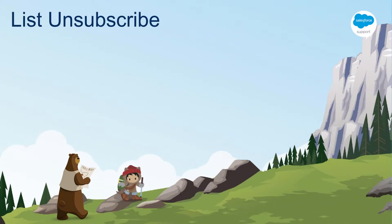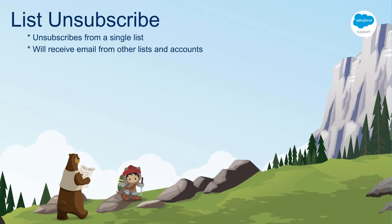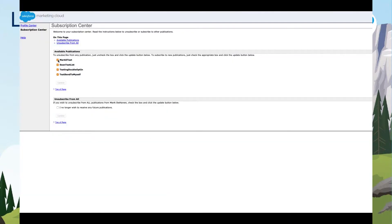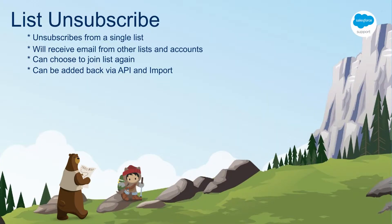The lowest level of unsubscribe is a list unsubscribe. If a subscriber no longer wants to get email relating to a particular list in your account, they can just opt out of that list but will receive email from other lists in the same account. If they decide to opt in again, this is as easy as visiting the subscription center and choosing that list again. They can also be opted in via API call or list import.